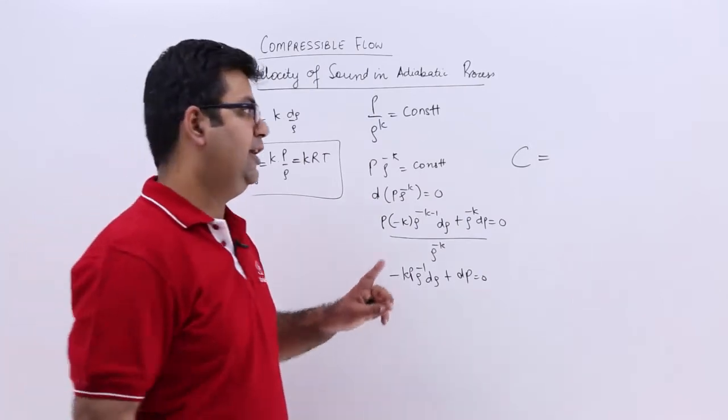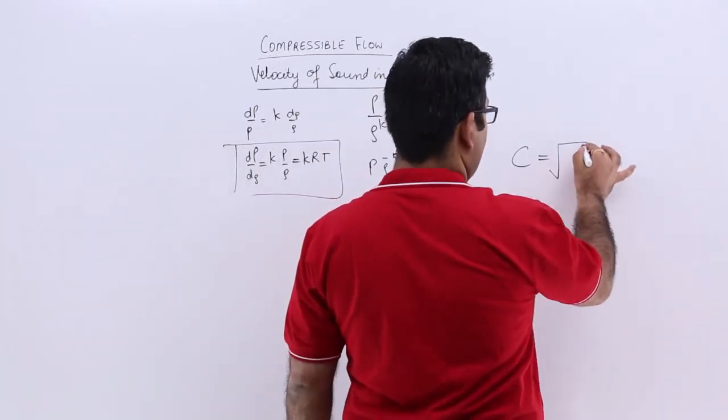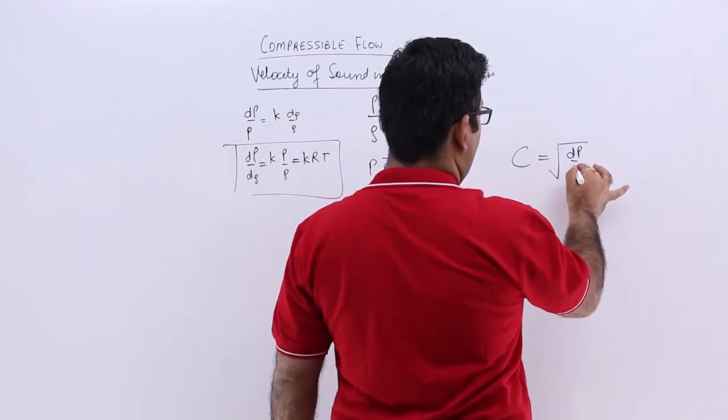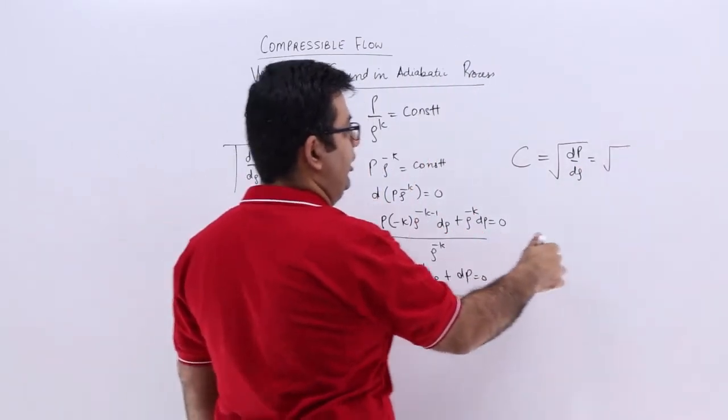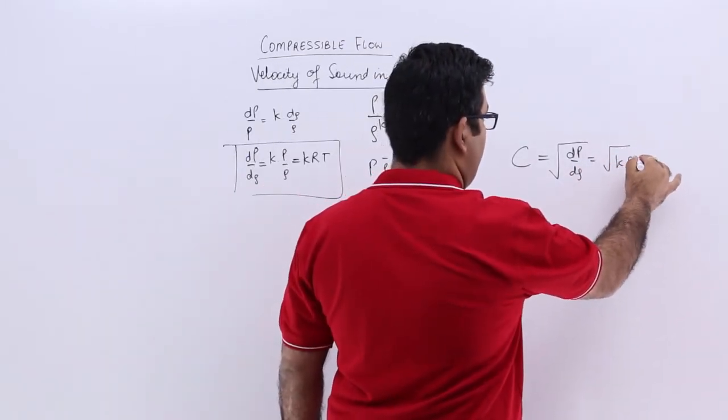If you remember the formula for the velocity of sound, it is the square root of dp by d rho. This will be equal to k times RT.